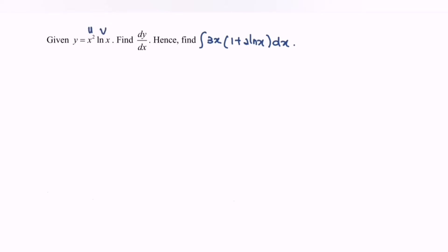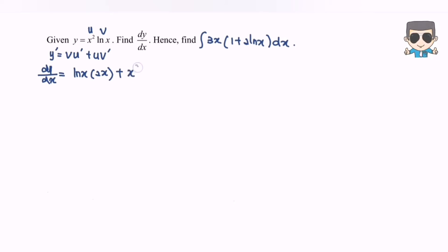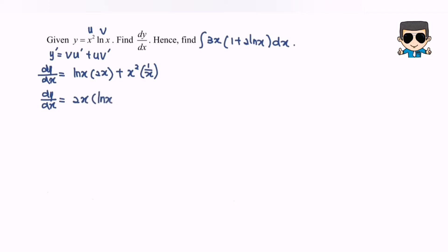Using the product rule, y prime equals v·u prime plus u·v prime. So dy/dx equals ln x multiplied by 2x, plus x squared multiplied by 1 over x. This simplifies to 2x·ln x plus x, which we can factor as dy/dx equals x bracket 1 plus 2 ln x.